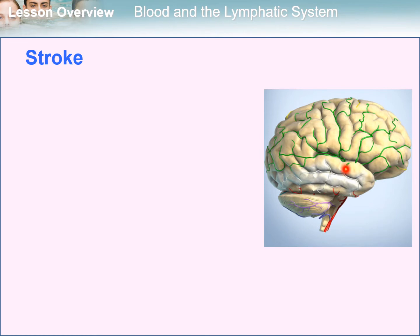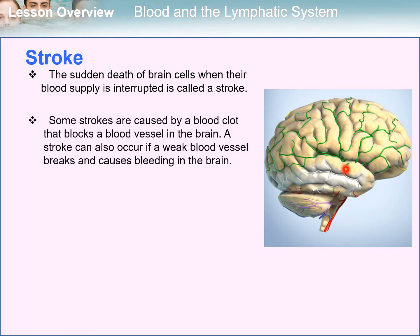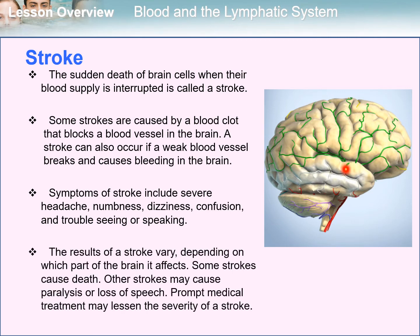Another circulatory disease is stroke. The sudden death of brain cells when their blood supply is interrupted is called a stroke. Some strokes are caused by a blood clot that blocks a blood vessel in the brain. A stroke can also occur if a weak blood vessel breaks and causes bleeding in the brain. Symptoms of stroke include severe headache, numbness, dizziness, confusion, and trouble seeing or speaking. The results of a stroke vary depending on which part of the brain it affects. Some strokes cause death; others may cause paralysis or loss of speech. Prompt medical treatment may lessen the severity of a stroke.